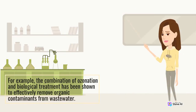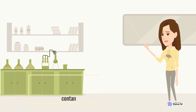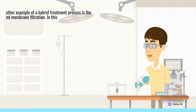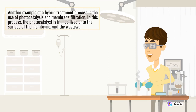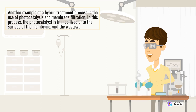For example, the combination of ozonation and biological treatment has been shown to effectively remove organic contaminants from wastewater. Another example of a hybrid treatment process is the use of photocatalysis and membrane filtration. In this process, the photocatalyst is immobilized onto the surface of the membrane and the wastewater